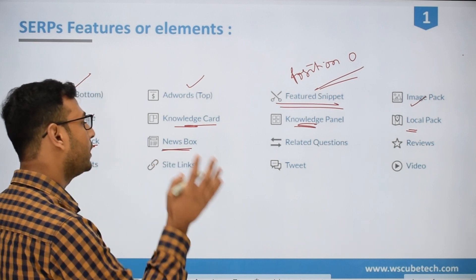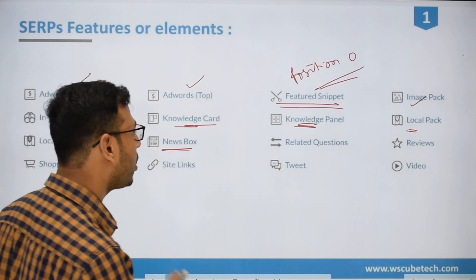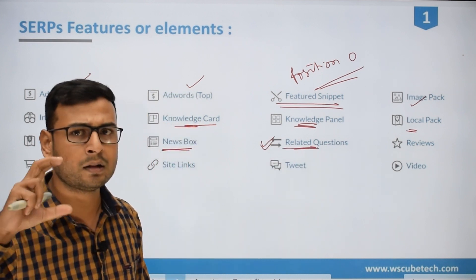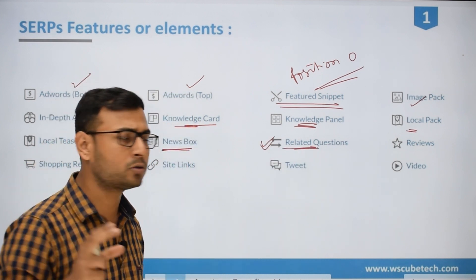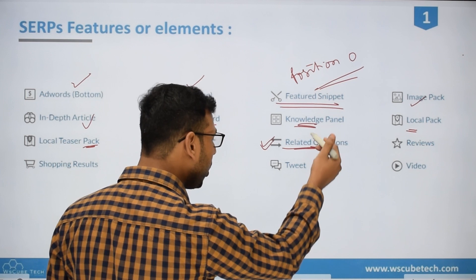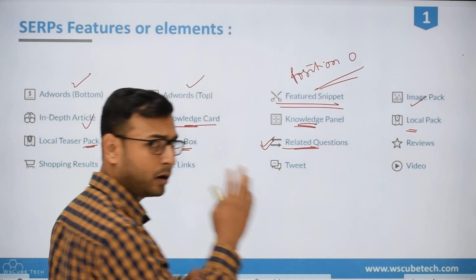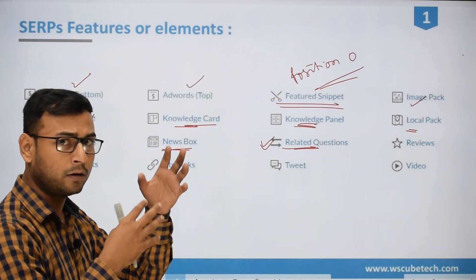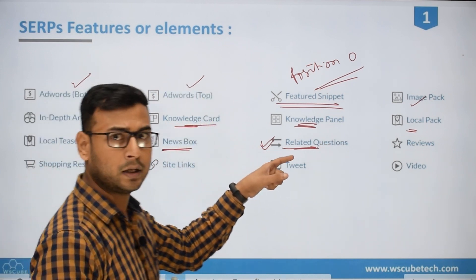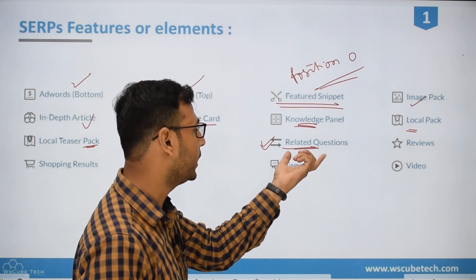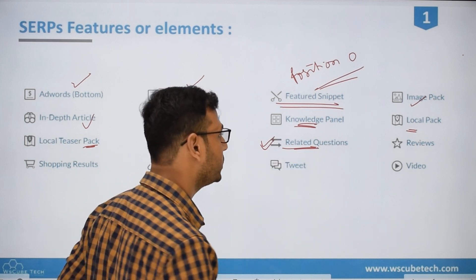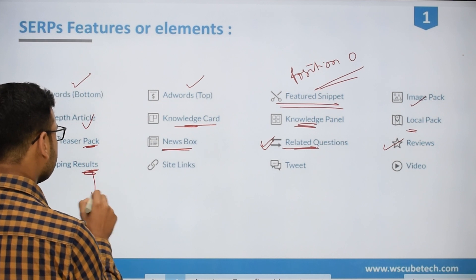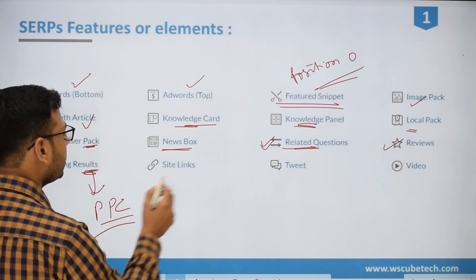This is news box — you can devise a strategy for the news box. You can also devise a strategy for the related questions. In the SERP, you actually see 'People Also Ask' — that kind of element comes under related questions. Then you have a reviews option, and then you have shopping results, which is again a PPC-based option.